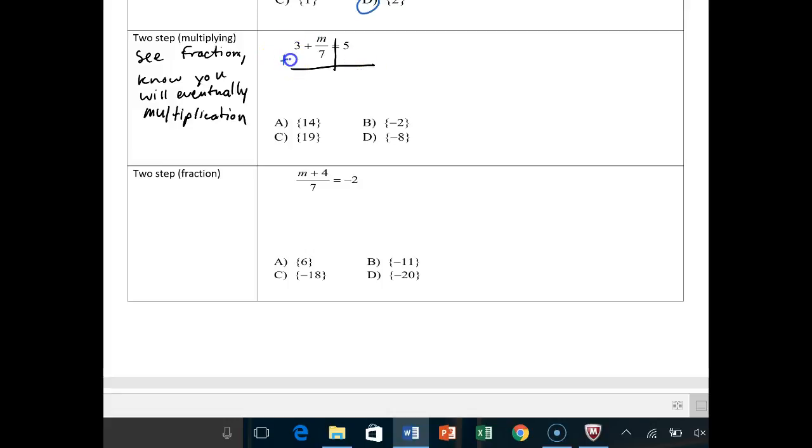We first add, always add. And we're adding negative 3 to both sides because we want to make that 0. Those cancel out. This gets dropped down. We have M over 7 equals 2. This was a DSSM, different sign subtract.